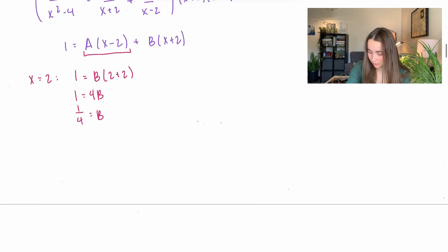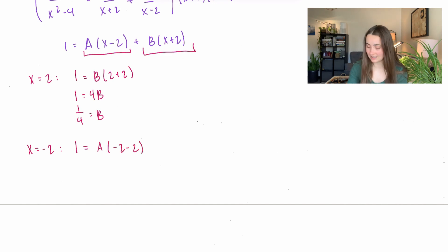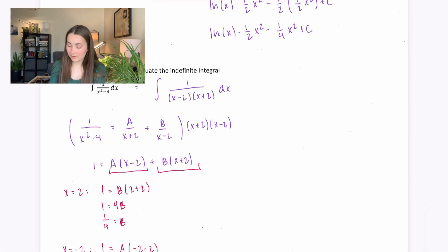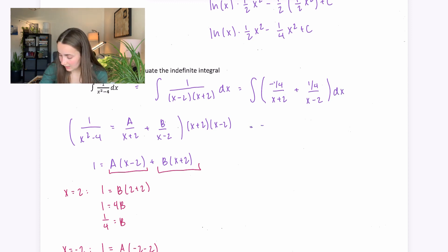Now plugging in x = -2: the B term cancels, so 1 equals A times (-2-2) = -4A, giving A = -¼. Now replacing in the integral: we integrate -¼/(x+2) plus ¼/(x-2) dx, getting -¼ ln|x+2| plus ¼ ln|x-2| plus c.